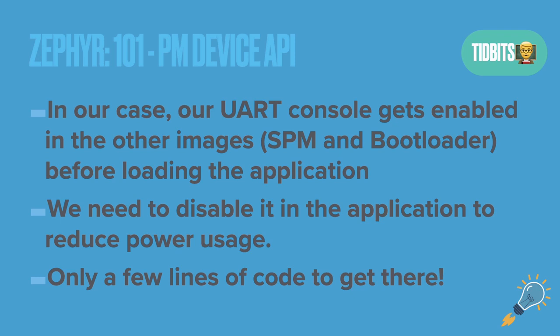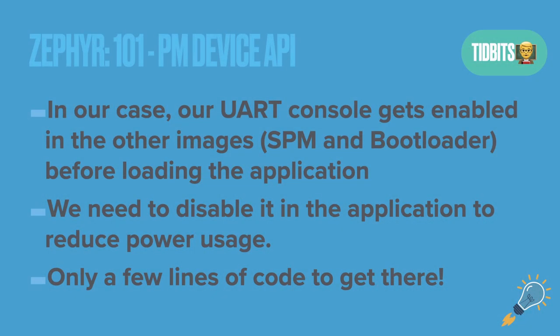We're using the UART console in this case. There are some interesting things happening here. During the boot-up process on the NRF9160 Feather, there are actually two images that get called before you get to your application code — the bootloader and the SPM, the Secure Partition Manager, or in newer versions of NCS it's slightly different. What happens is that different drivers get changed or GPIOs get set depending on the configuration of those sub-images. So things get turned on and don't necessarily get turned off. We're turning off the UART because it gets turned on in the bootloader stage, and we'll disable it to reduce power usage.